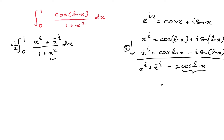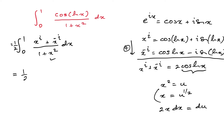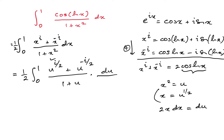Now, since we have x squared in the denominator, I'm going to use the substitution x squared equals u, so x equals u to the 1/2. Differentiating gives 2x dx equals du. Plugging in, the limits remain 0 to 1, and x to the i becomes u to the i over 2, and x to the minus i becomes u to the minus i over 2.